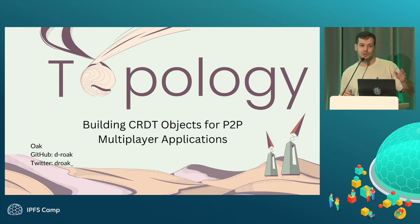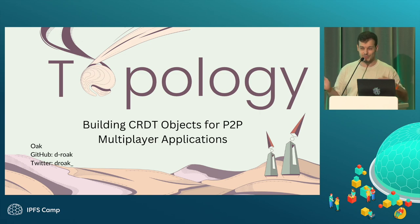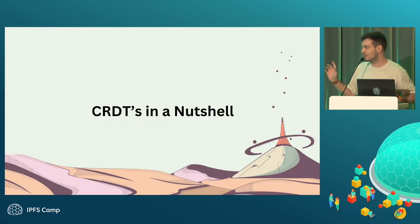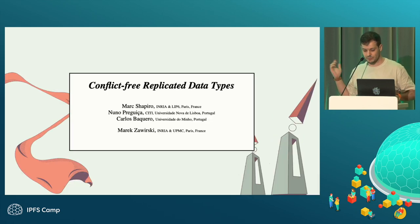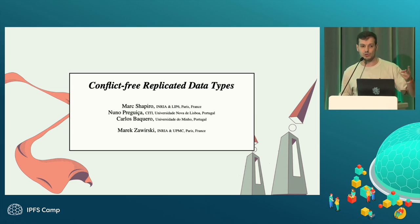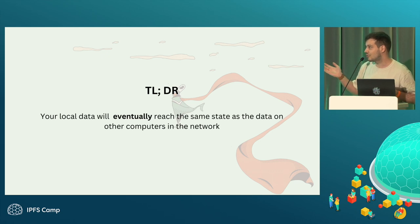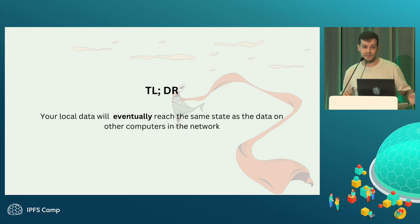So who here knows about CRDTs? Some people — quite some people. I'm still going to give a super brief introduction on CRDTs. CRDTs were mainly written in a paper called conflict-free replicated data types by two authors in Portugal and two in France. The TLDR is: I can just do whatever I want locally, and eventually, when I'm merging with other computers on the network, we are going to achieve the same state.